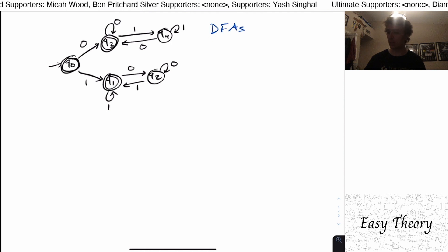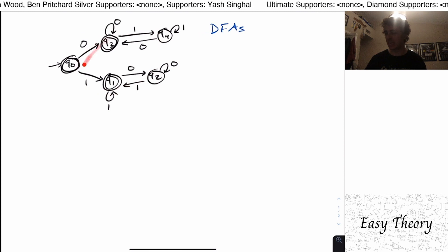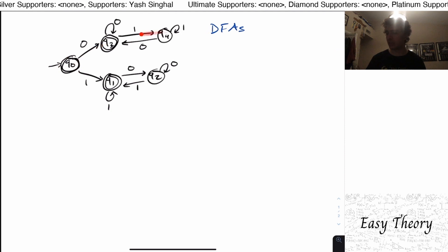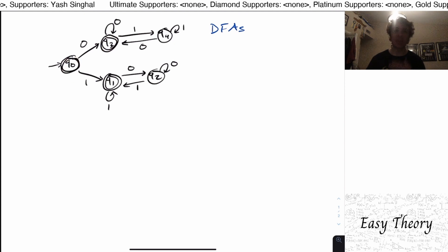And what those are is a state-based machine, kind of like this one, where we have some states, and in this case we happen to have five states. We have a start state, transitions in between the states, and some of the states are marked with a double circle, meaning that they're final.